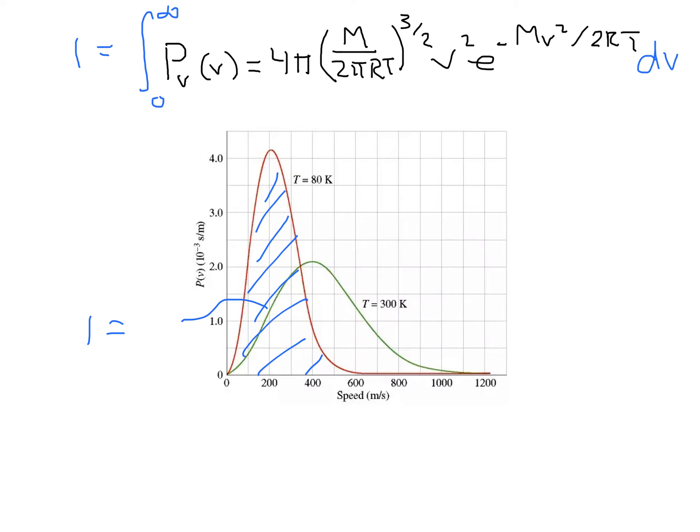Another feature of this probability distribution is that there is a velocity which maximizes the probability. So, we get a maximum in the curve, for instance, at 80 degrees, of about 200 meters per second. That is, most of our molecules are going at 200 meters per second. Remember that, mathematically, the way we find a maximum is to set the derivative equal to 0 and solve for V_max.